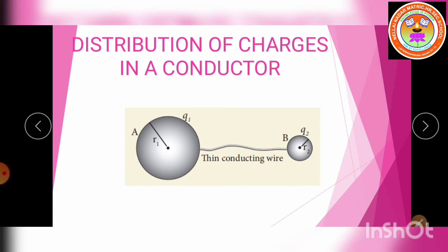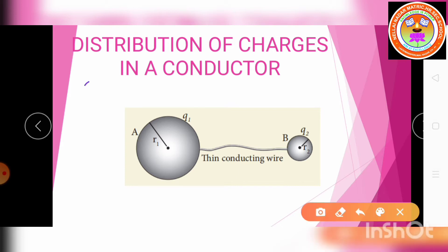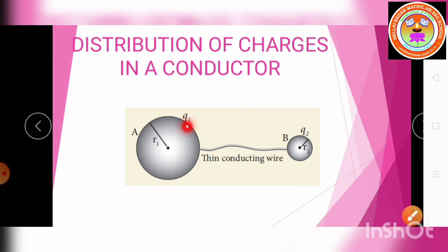The distance between the spheres is much greater when compared to the radius of the spheres. A charge Q is introduced to any one of the spheres. This charge Q is redistributed into both the spheres such that the electrostatic potential is the same in both. Let Q1 be the charge on the surface of sphere A and Q2 be the charge on the surface of sphere B.